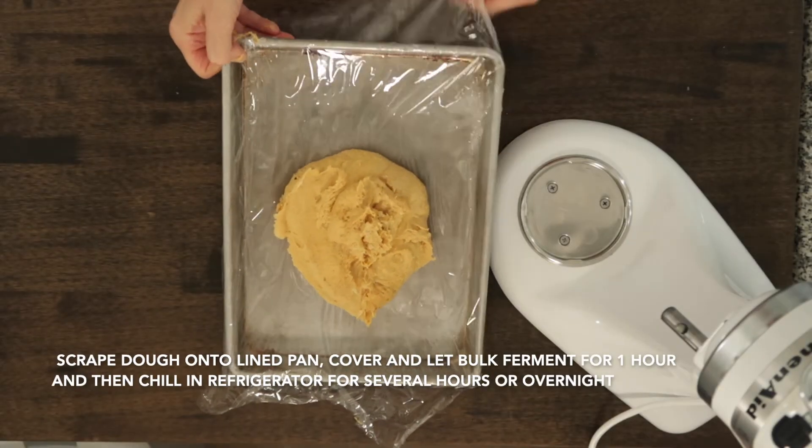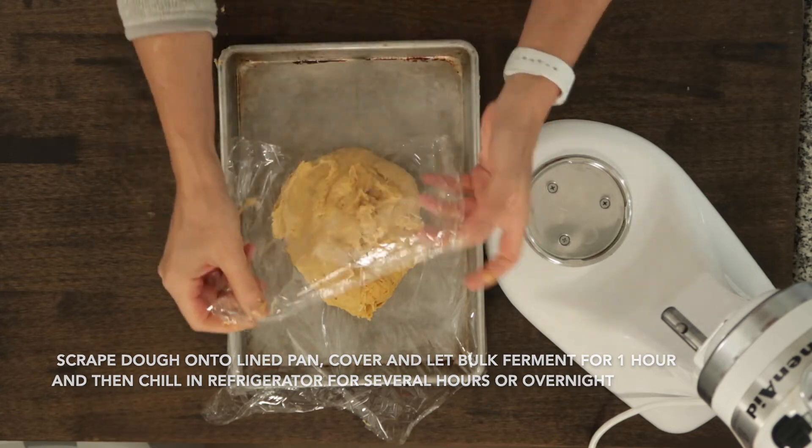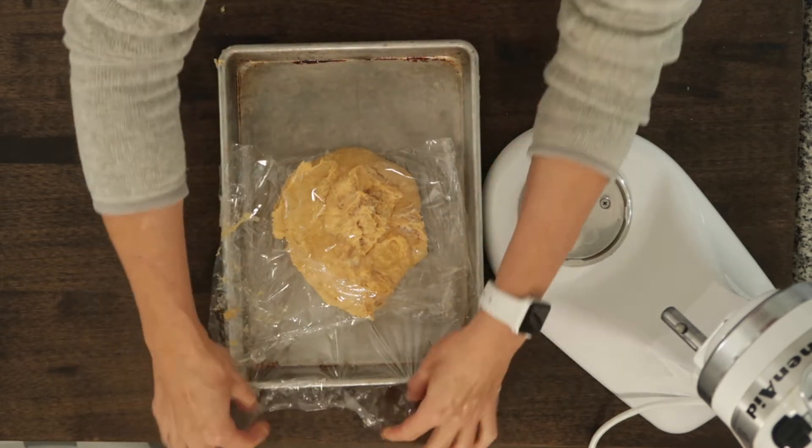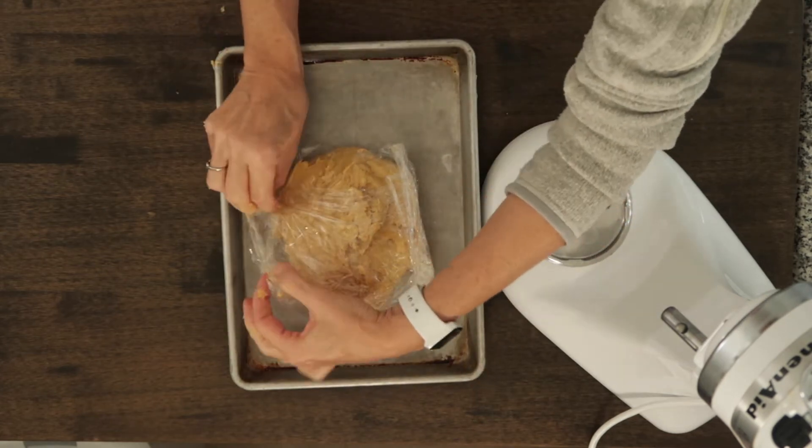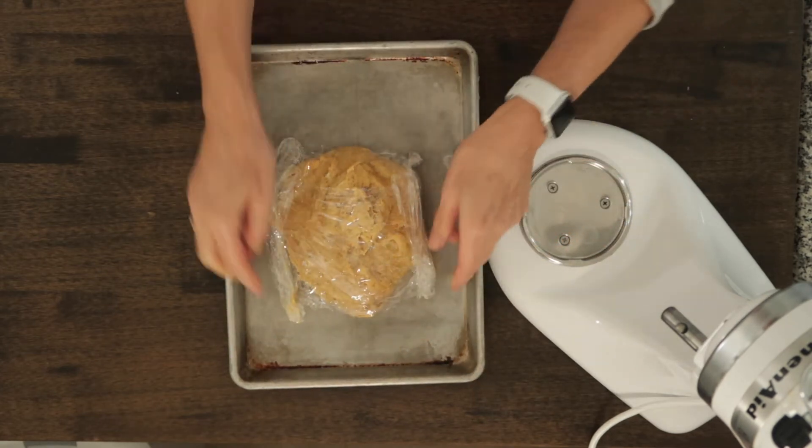After the five minute mix, the dough will be beautiful and smooth. Scrape onto a piece of plastic wrap and wrap loosely. Bulk ferment for one hour at room temperature. Then chill for at least two hours before shaping.